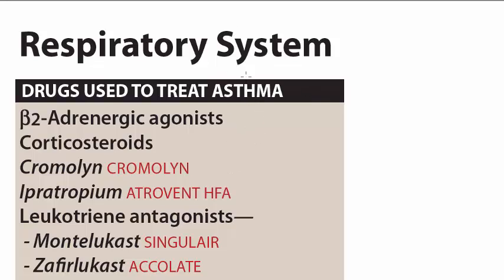In asthma we have two types of strategies: quick relief and long-term treatment. For quick relief we use epinephrine and selective beta-2 agonists like albuterol.